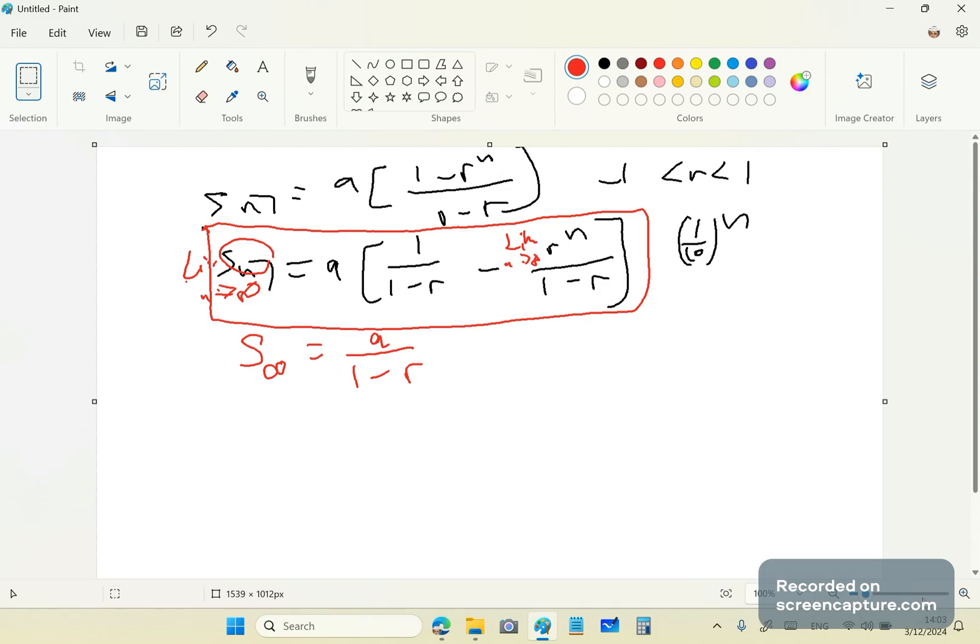What if I have a series like this? Three-tenths, three-tenths plus three-hundredths plus three-thousandths, plus dot, dot, dot. Now, they'll be very quick to say, hmm, the first term is three-tenths.